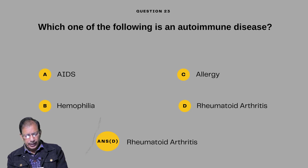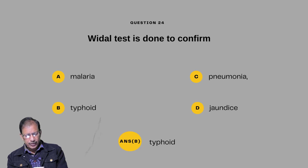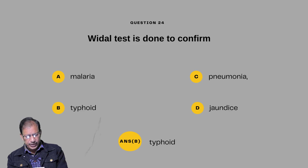Question number twenty-three: Which one of the following is an autoimmune disease? Options are A, B — hemophilia, C — allergy, D — rheumatoid arthritis. Answer D will be rheumatoid arthritis. Question number twenty-four: The Widal test is done to confirm — A: malaria; B: typhoid; C: pneumonia; D: jaundice. The Widal test is done to confirm typhoid disease.